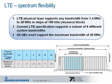Now let's have a closer look at the spectrum flexibility in LTE. The physical layer supports any bandwidth from 1.4 MHz to 20 MHz in steps of 180 kHz, which is the resource block definition. The current LTE specifications support a subset of six different system bandwidths for FDD and TDD, as shown in the table, with values from 1.4 up to 20 MHz each corresponding to a certain number of resource blocks.